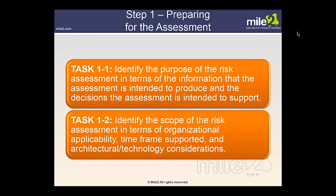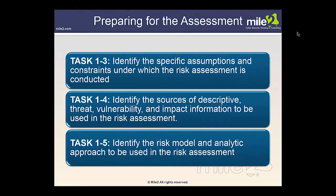Preparing for the assessment (Step 1) divides into tasks. Task 1-1: identify the purpose of the risk assessment in terms of what information it is intended to produce and what decisions it is intended to support. Task 1-2: identify the scope in terms of organizational applicability, timeframe, and architectural/technology considerations. Task 1-3: identify specific assumptions and constraints under which the risk assessment is conducted. Task 1-4: identify sources of descriptive, threat, vulnerability, and impact information. Task 1-5: identify the risk model and analytic approach to be used.